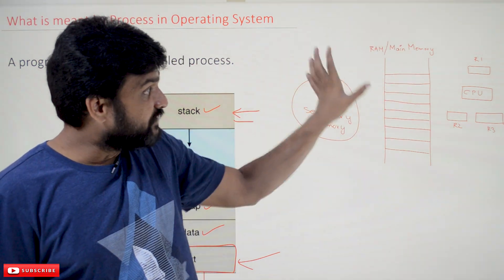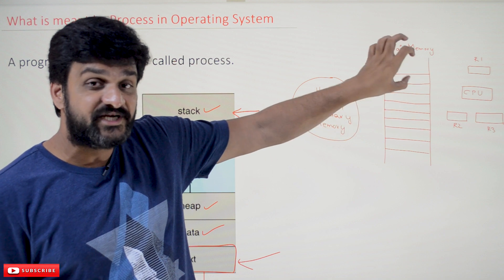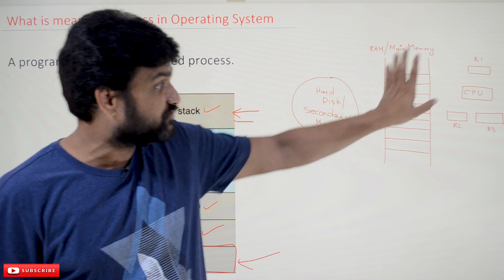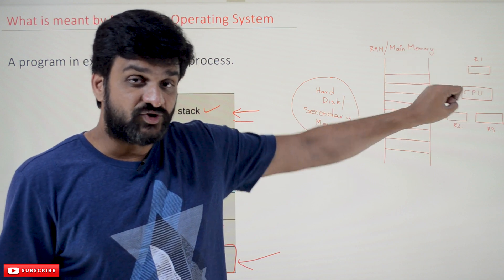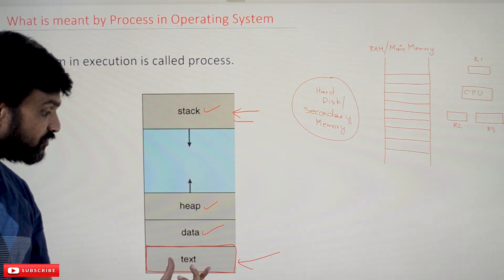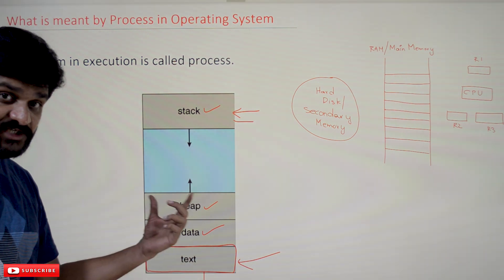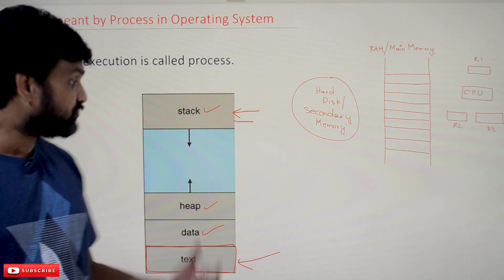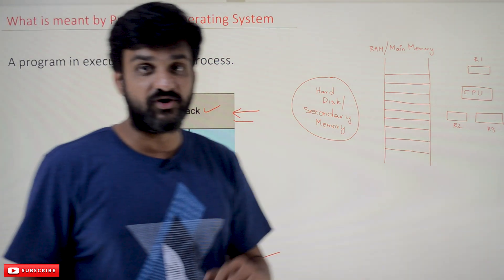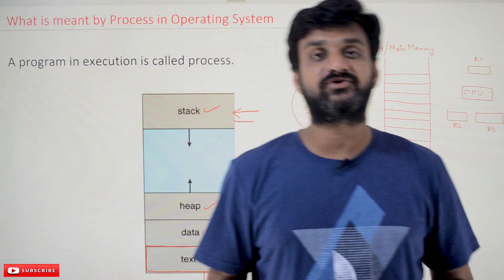Whenever it's getting shifted to main memory, it means the program is in execution. The instructions of that program will be shifted to the CPU. The creation of a process from a program is done by the operating system. This is what we call a process in operating systems. Hope you got the clarity on this concept. Thanks for watching.